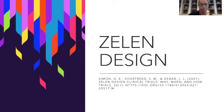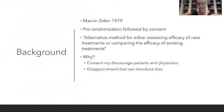The Zelen design was first proposed by Marvin Zelen in 1979. It is a form of randomized clinical trial design. Marvin Zelen was a statistician from Harvard School of Public Health.